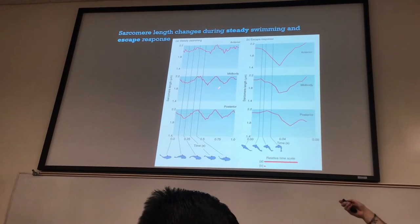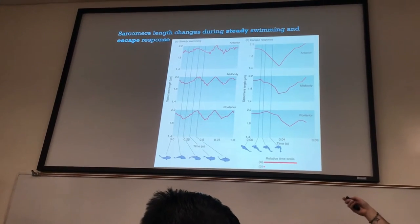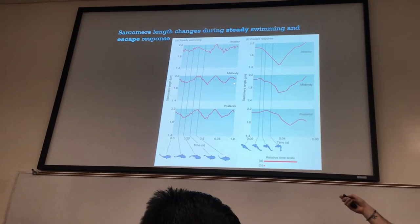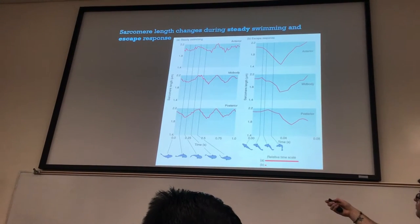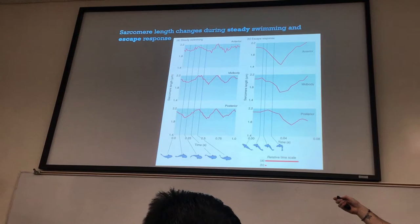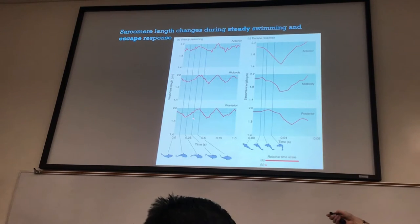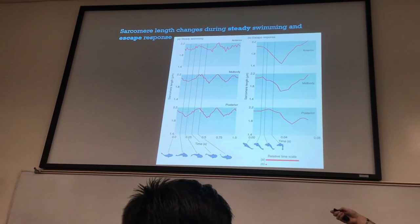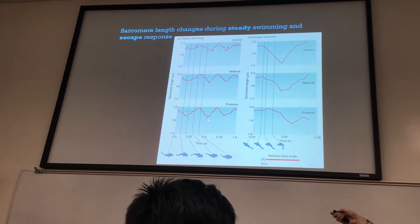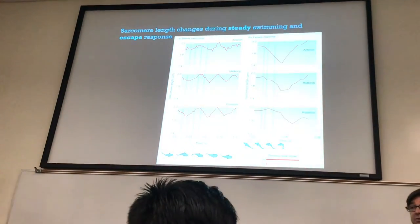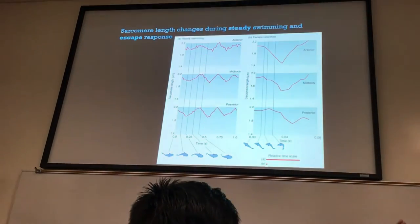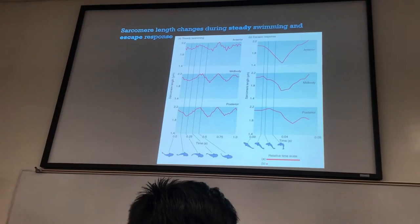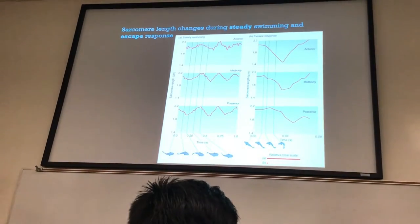Mid-body, there's a little bit more deviation from that dotted line, so you get greater shortening and greater lengthening. And then when we look at the posterior, it's even more pronounced — the shortening and the lengthening — because the animal is contracting the muscles more in its tail than in the anterior part of the body.